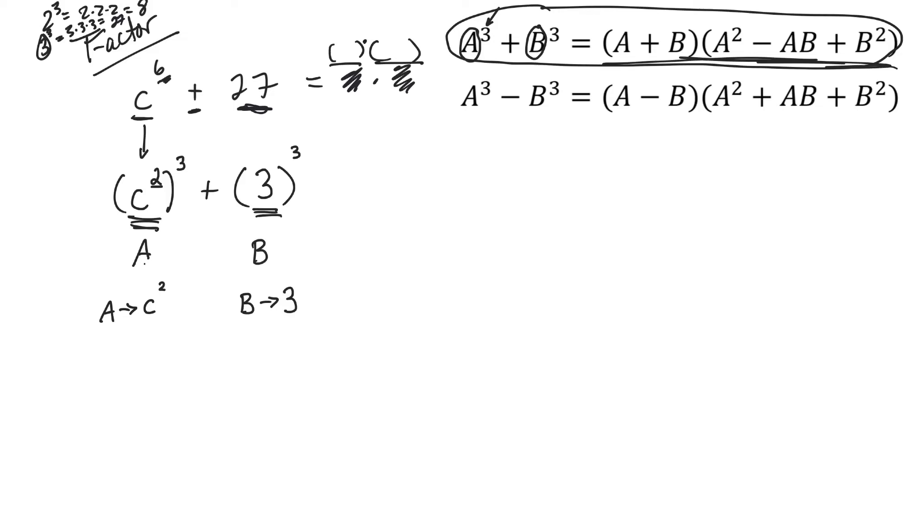Okay, let's just rewrite our formula here for a second. So A cubed plus B cubed equals A plus B, A squared minus AB plus B squared. So all of those letters, and I'm focused over here, all of those letters, I have to plug something in for it. So A is C squared plus B is 3.